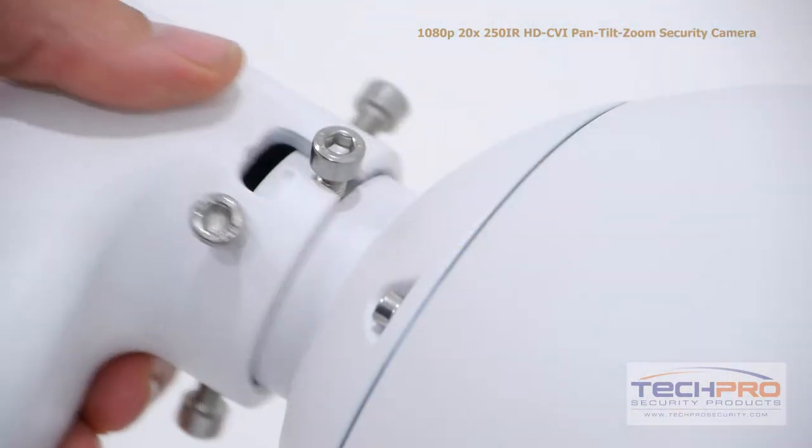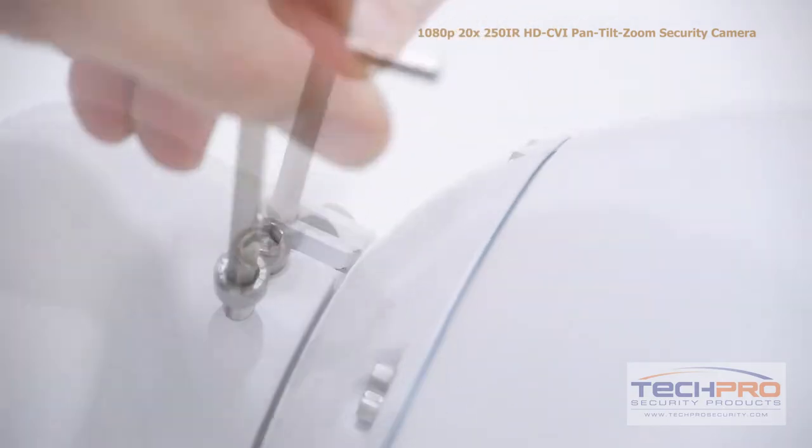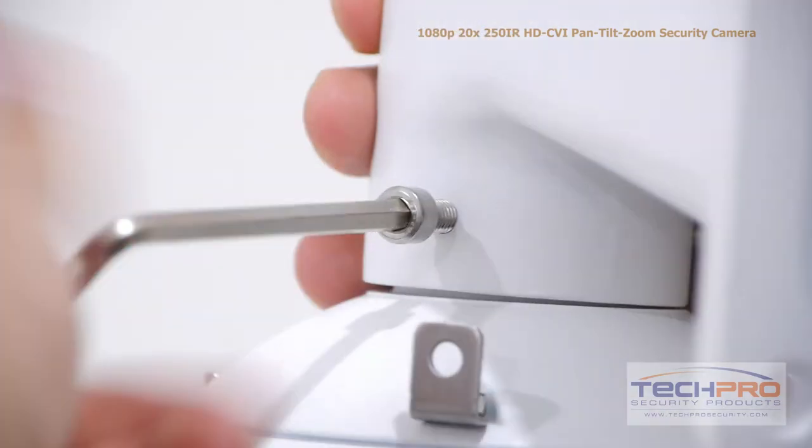Hook the screw attached to the camera dome into the nook on the wall mount, then tighten it with an allen wrench. Then tighten the rest of the screws around the wall mount.